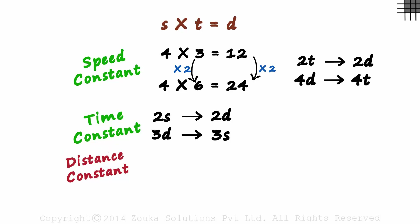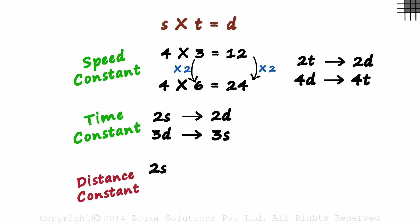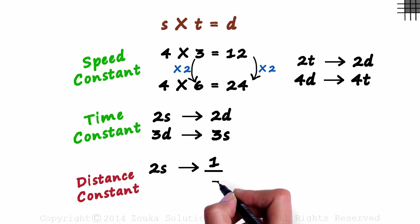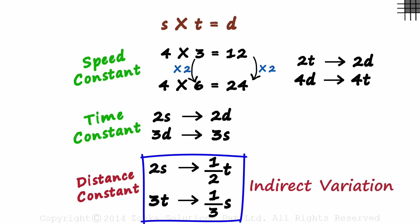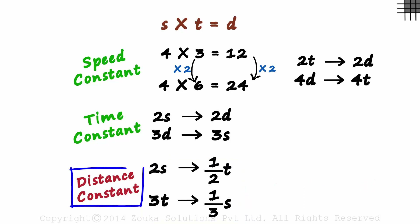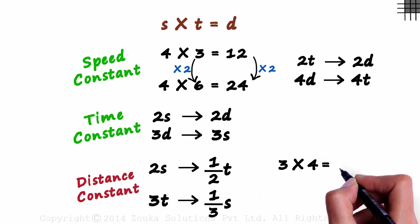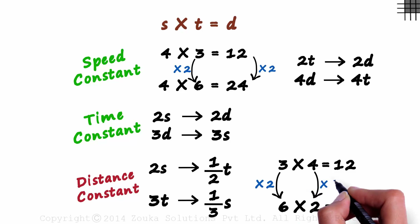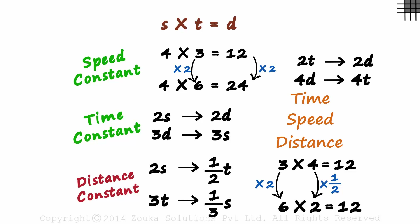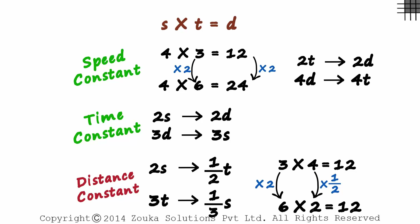What if the distance travelled is constant? If the speed is multiplied by 2, then the time taken will be multiplied by 1/2, or divided by 2. If the time taken is multiplied by 3, then the speed will be multiplied by 1/3. This is indirect variation. For example: 3 times 4 is equal to 12, and 6 times 2 is equal to 12 — the distance is constant. The speed is multiplied by 2 and the time taken is multiplied by 1/2. These simple concepts help us in solving time, speed, and distance problems really quickly, especially when one parameter is constant.